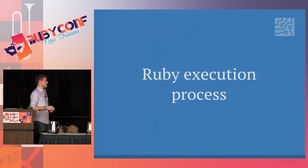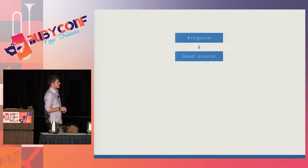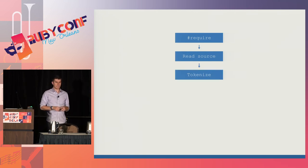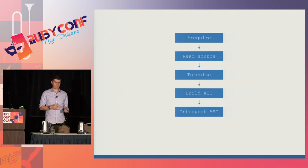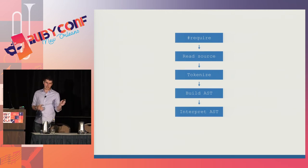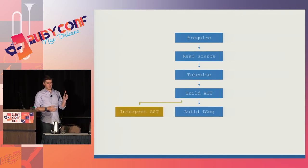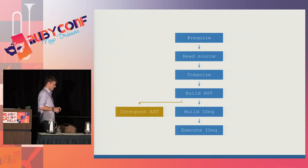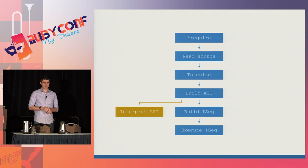There are a lot of different parts to this. It starts with code getting required. After code gets required, the source is read, it's then tokenized, you build an abstract syntax tree, and you interpret the abstract syntax tree. That was the case with Ruby 1.8. Nowadays, we build instruction sequences and we go and execute those instruction sequences. This is the flow that your code goes through when Ruby gets executed.